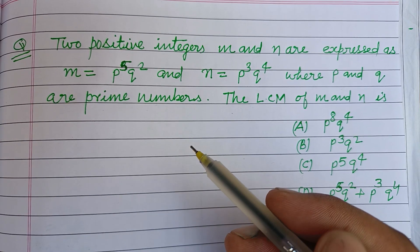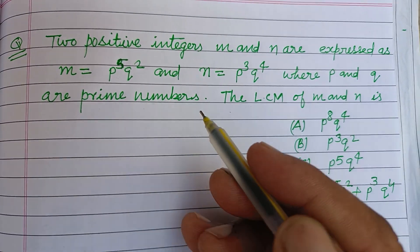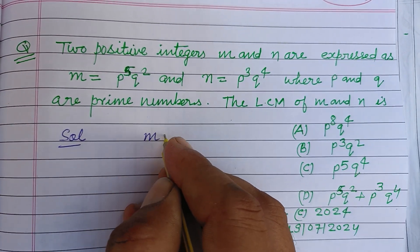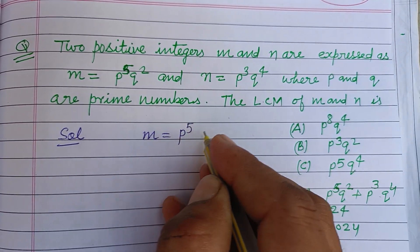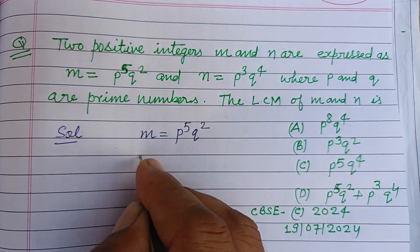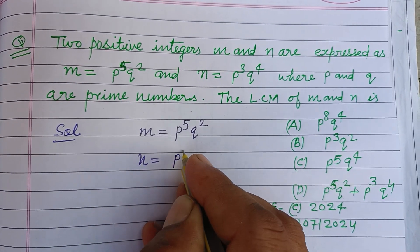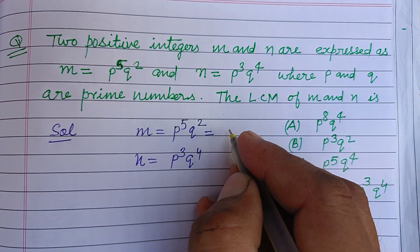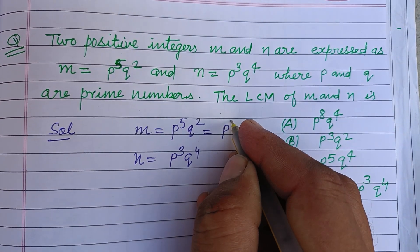The LCM of m and n is - so student, here m is given to us p to the power 5 q square, and n is given to us p to the power 3 q to the power 4. We factorize these like p q into p square into q square.